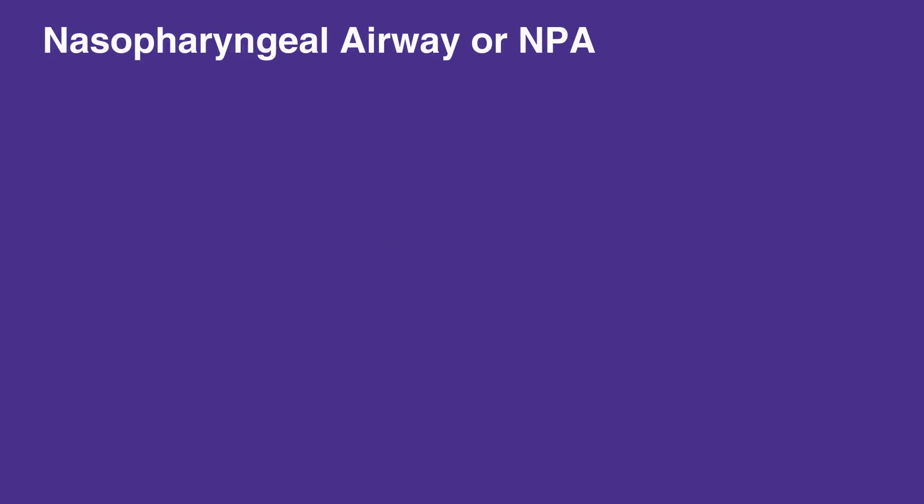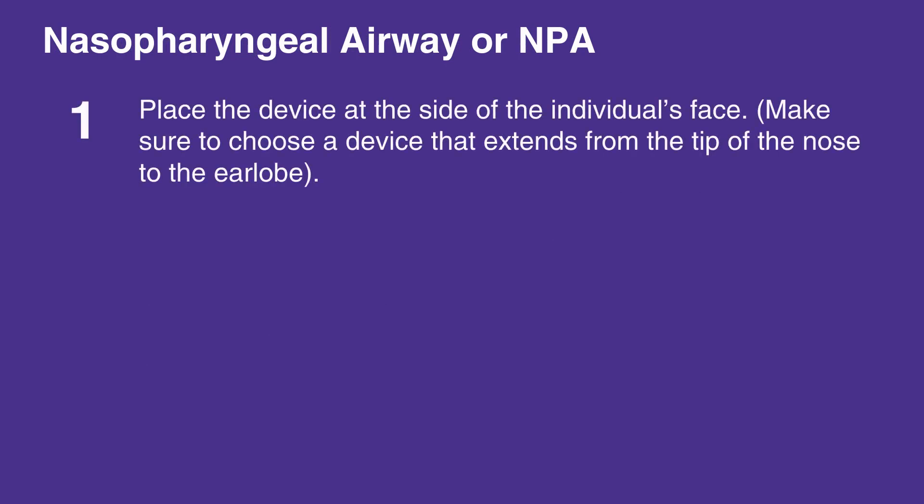To insert a nasopharyngeal airway, or NPA, place the device at the side of the individual's face. Make sure to choose a device that extends from the tip of the nose to the earlobe. Use the largest diameter device that will fit.